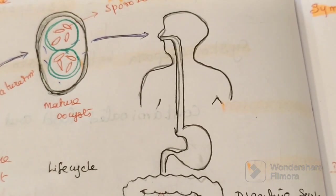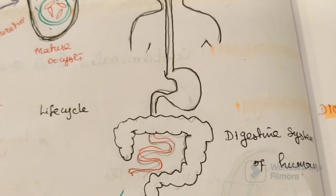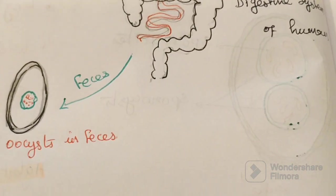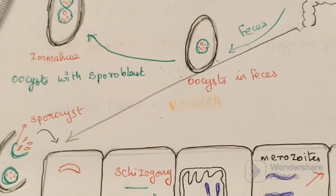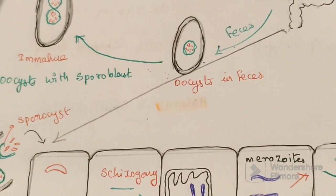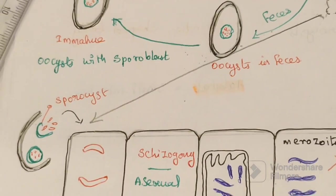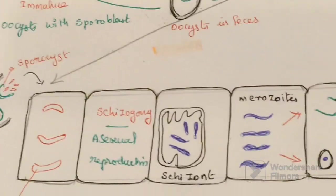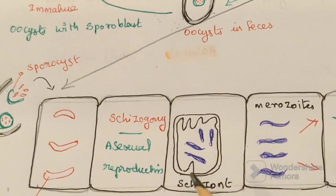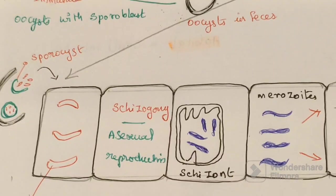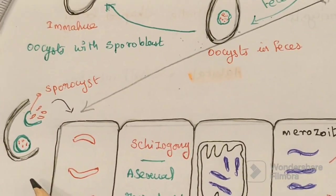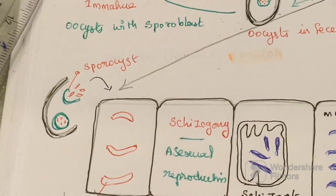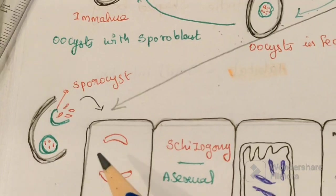The mature oocysts then enter the human digestive system, consumed through contaminated food and water. Isosporiasis is a human intestinal disorder because the major part of the life cycle occurs in the human digestive system. Our digestive system contains epithelial cells. The mature oocysts, which contain sporocysts, enter the human digestive system and go near to the epithelial cell.